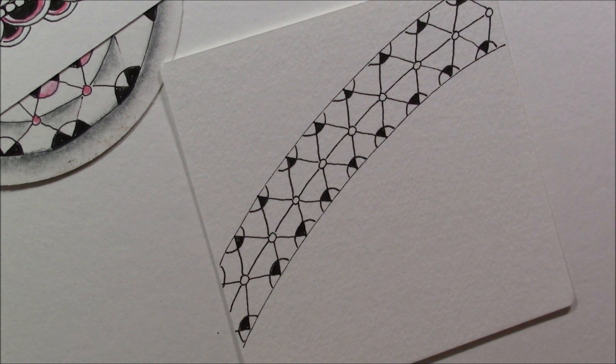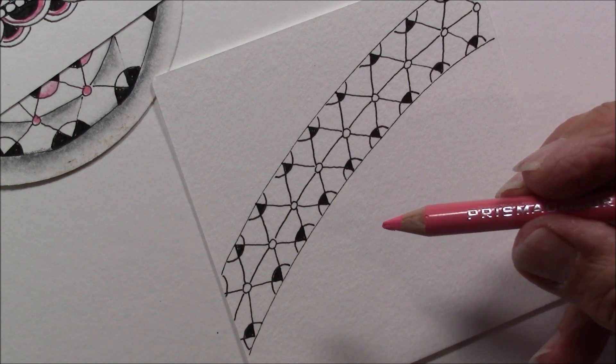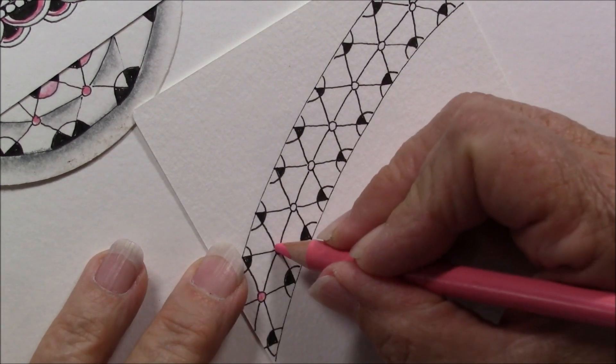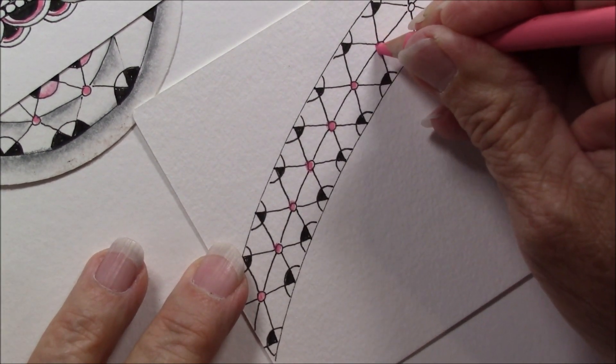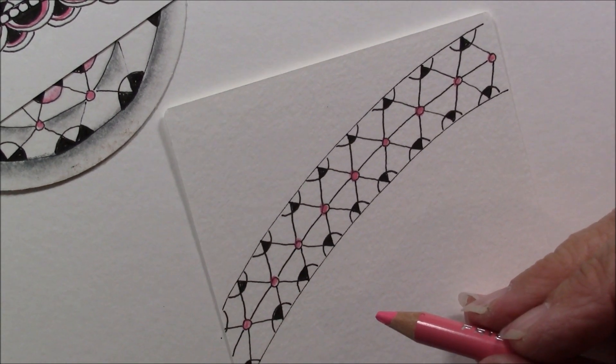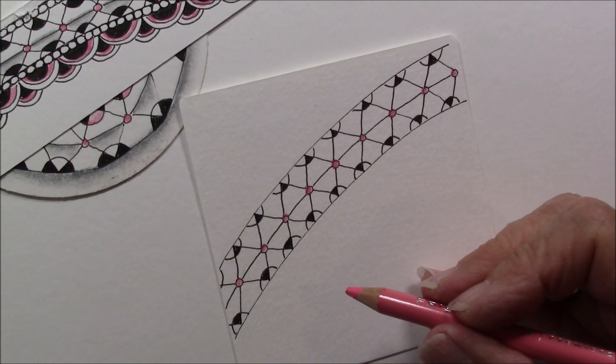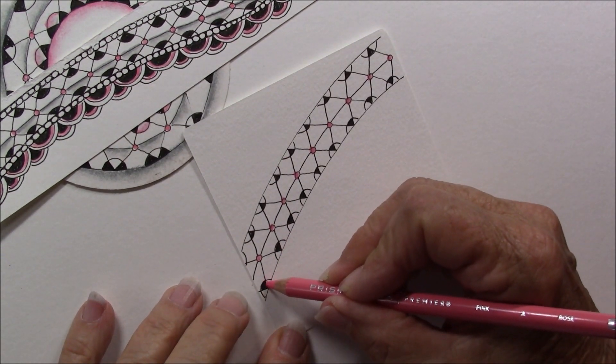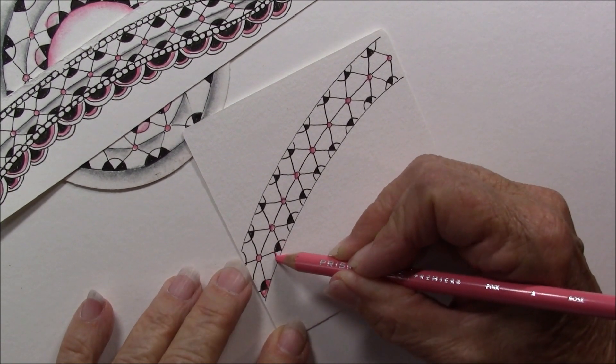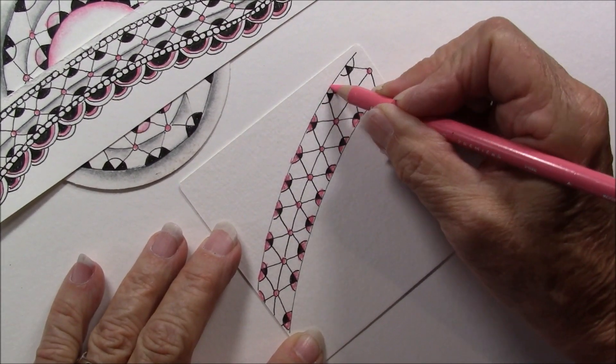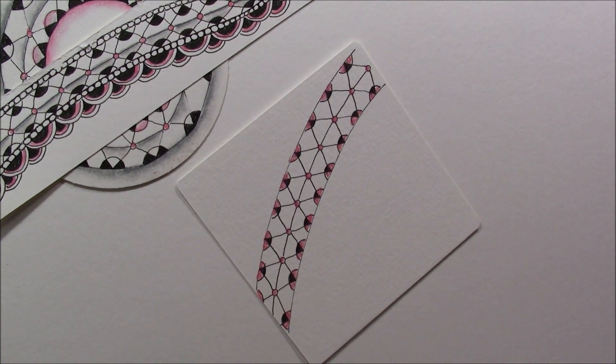And now we can come in and add a little pink or a little gray. I'm using a Prismacolor pink pencil, and I'm just going to add a little color here to each one of these little dots because I want a little color. I'm filling those in completely. And I'm also going to add a little color right here. Normally I would not add color until my tile is completely finished, but I just want to show you what you can do.